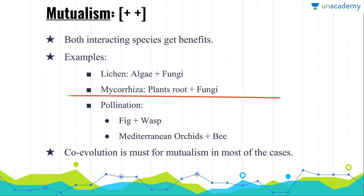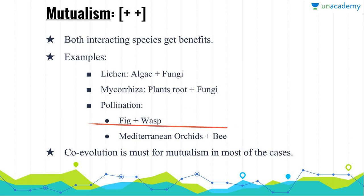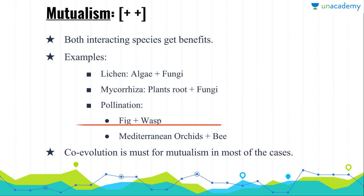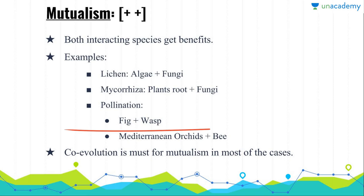In mycorrhiza, the same process happens between plant roots and fungi. In pollination, we can take the example of fig and wasp. The plant gets benefited by pollination and seed dispersal, while the pollinator gets benefited by nectar. In the fig-wasp relationship, the wasp helps the fig in the process of pollination, and in turn the wasp lays its eggs in the fruit of the fig.